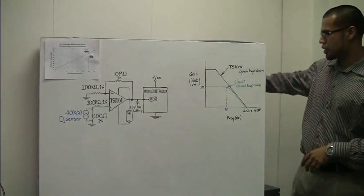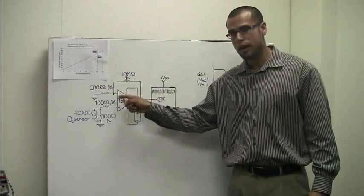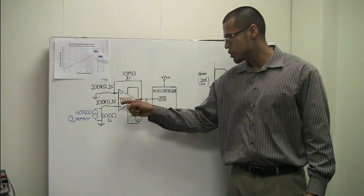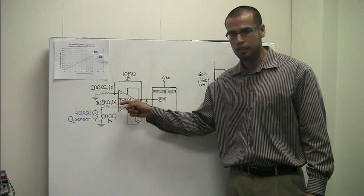Also notice in the circuit that 100 kiloohm resistors were added in order to minimize input bias current effects. In addition, it is recommended to use 1% tolerance resistor values in order to minimize gain errors.